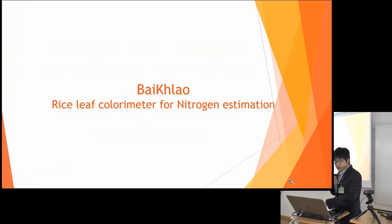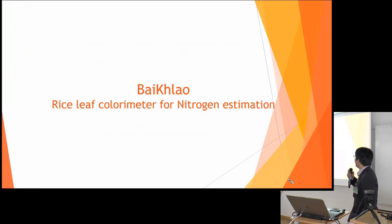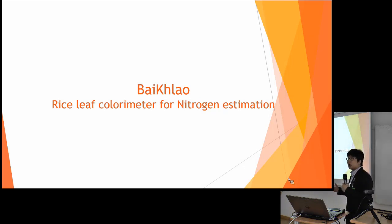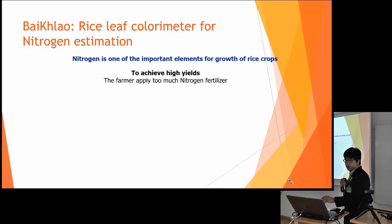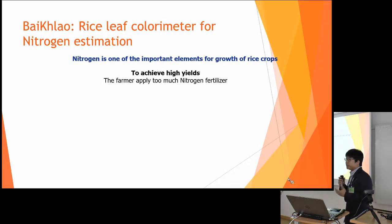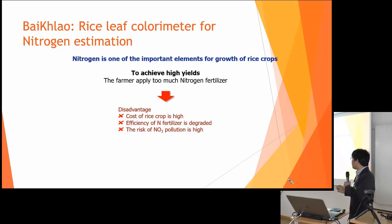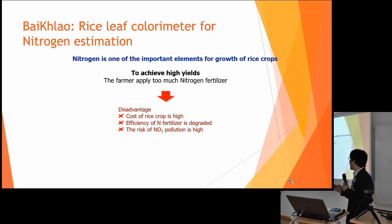The first thing is about the BiCar application — a leaf color meter for nitrogen estimation in the soil of the rice crop. Nitrogen is one of the important elements for the growth of the rice crop. To achieve high yield, the farmers apply too much nitrogen — they just put more and more to gain more product. But unfortunately, if the growth of the rice crop is higher, the efficiency of the nitrogen fertilizer degrades and the weight of the NO3 pollution is high.